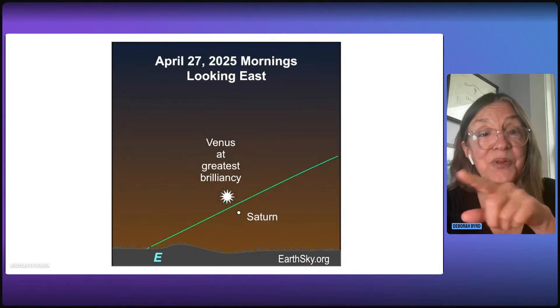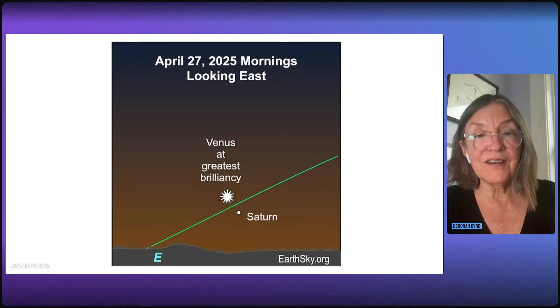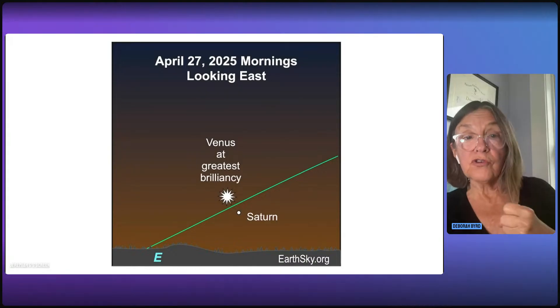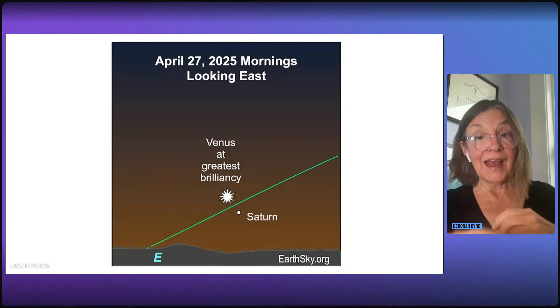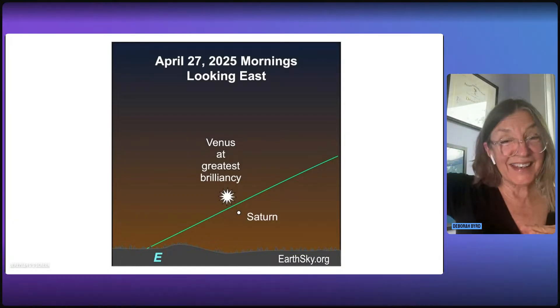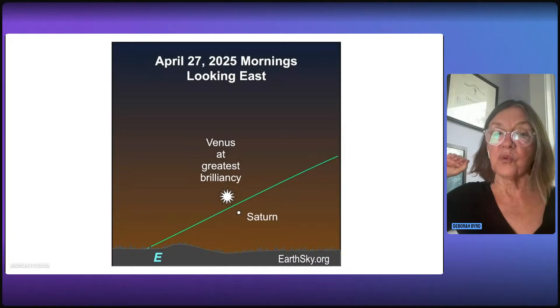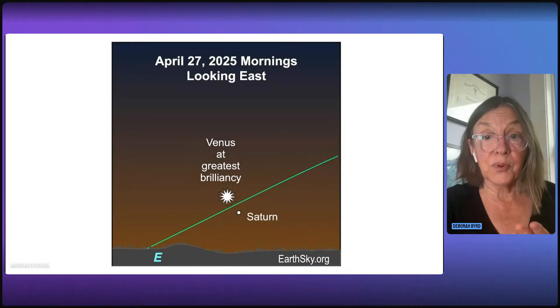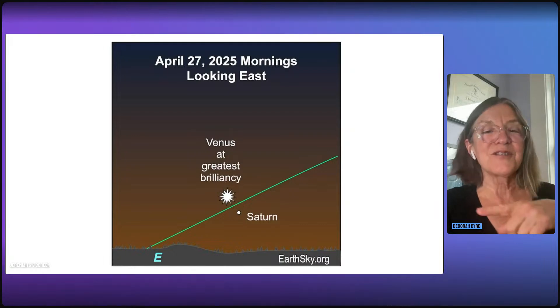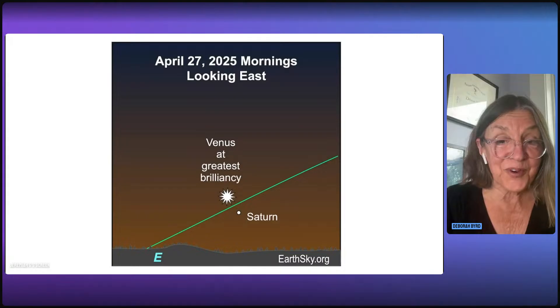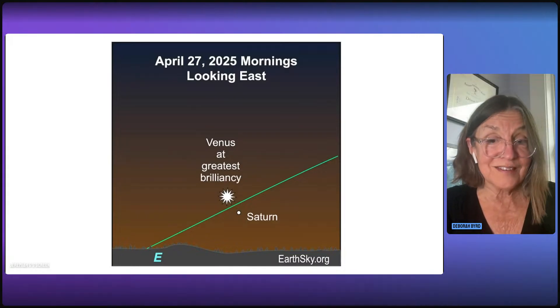And by the way, what do you think will happen after Venus goes between us and the sun on March 22nd, 23rd? It'll be gone from our evening sky, but it'll quickly emerge on the other side of the sun, and then it'll be fleeing ahead of us in orbit. Like right now, it's catching up to us, but after it goes between us and the sun, it'll be just racing ahead of us in orbit. Because remember, it's moving faster than we are. And then we'll have another greatest brilliancy for Venus in the east before sunrise on April 27th.